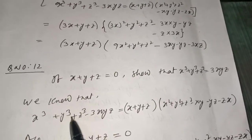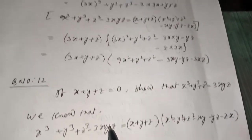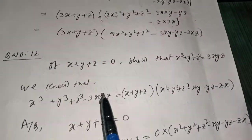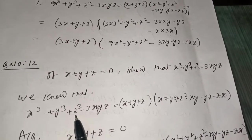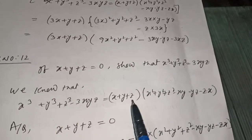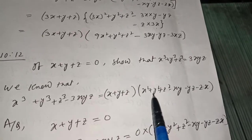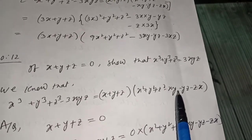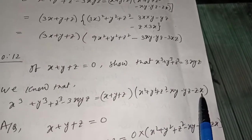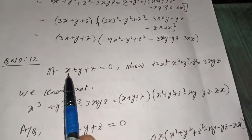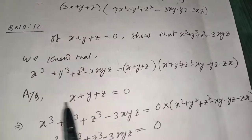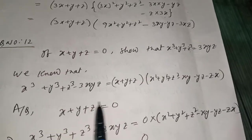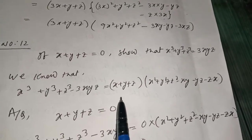We know the identity: x³ + y³ + z³ - 3xyz = (x + y + z)(x² + y² + z² - xy - yz - zx). We just used this identity. According to the question, x + y + z = 0, so we replace x + y + z with 0.